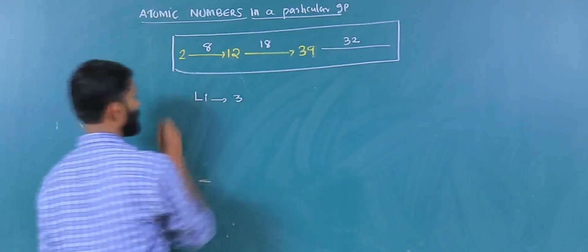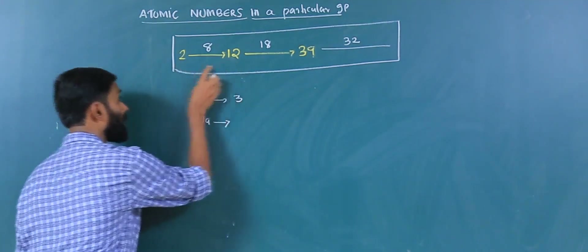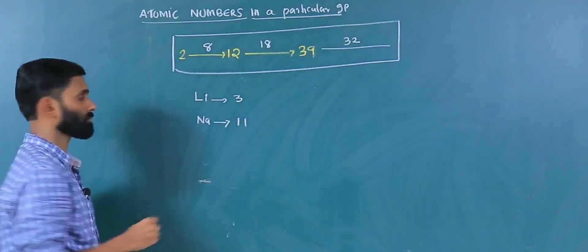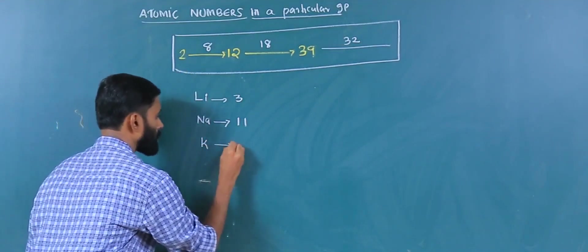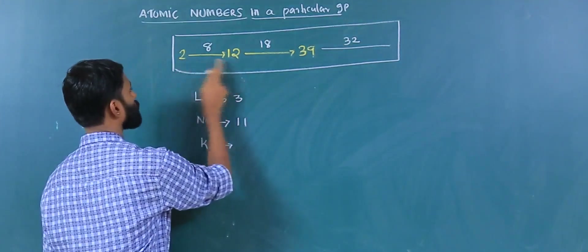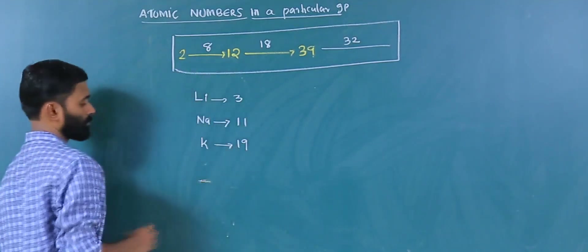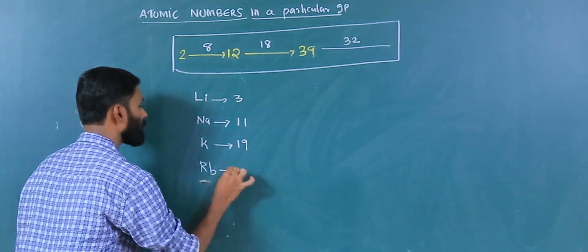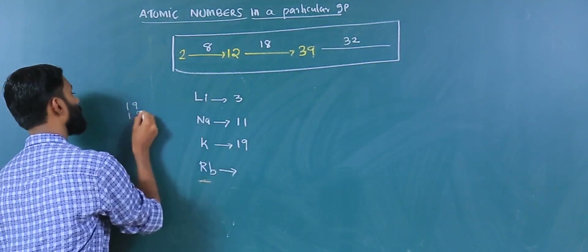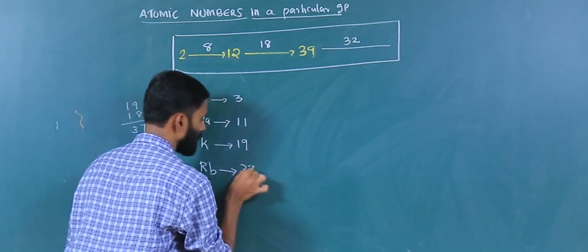For example, lithium has atomic number 3. The next element is sodium. Sodium's atomic number is 3 plus 8, which equals 11. Then potassium: atomic number 11 plus 8 is 19. Then rubidium: 19 plus 18 equals 37. Rubidium atomic number is 37.